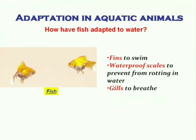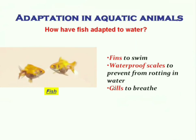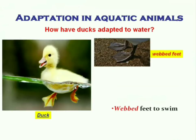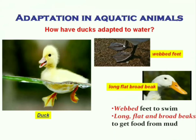Fish also have gills to breathe the air dissolved in water. Aquatic birds like ducks have webbed feet so that they can swim easily in water, and these birds also have long, flat, and broad beaks to get food from mud.